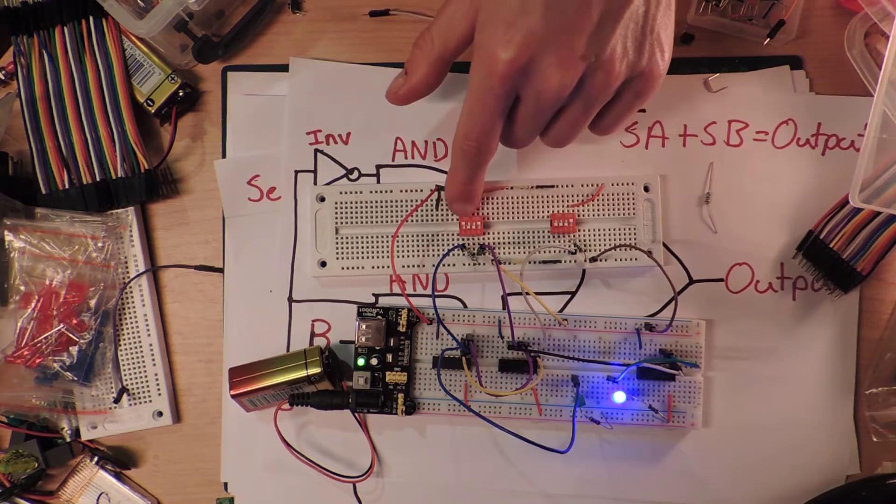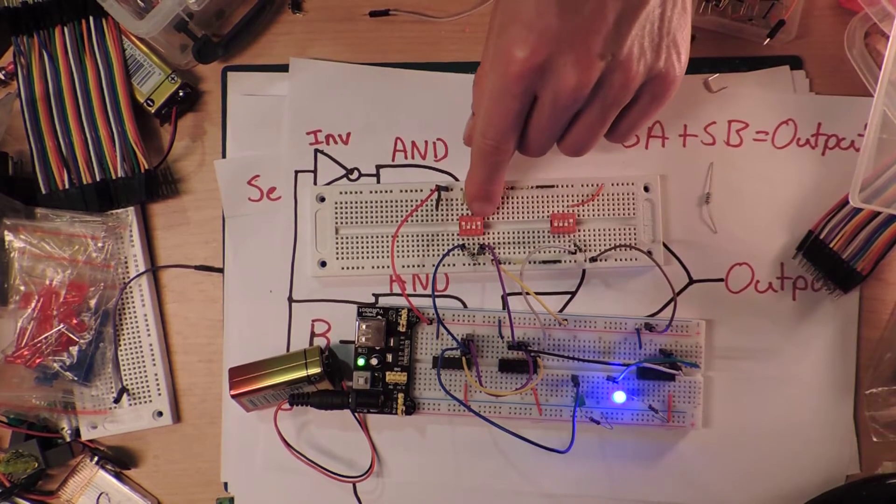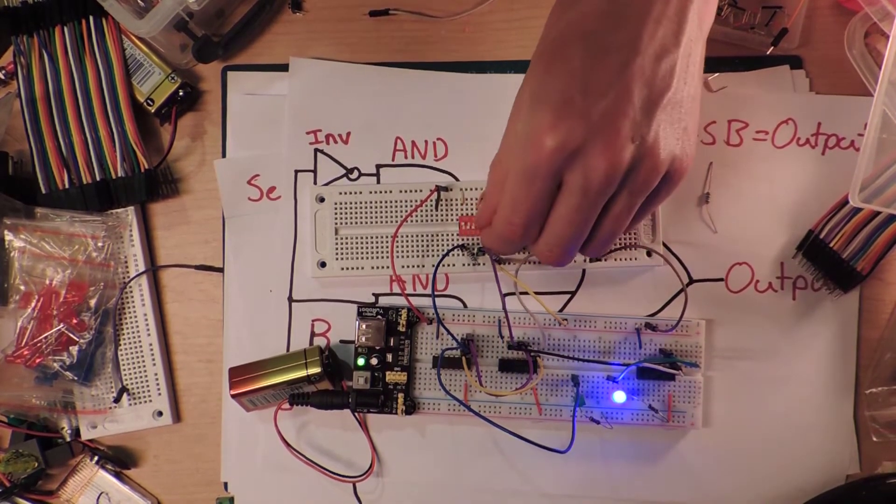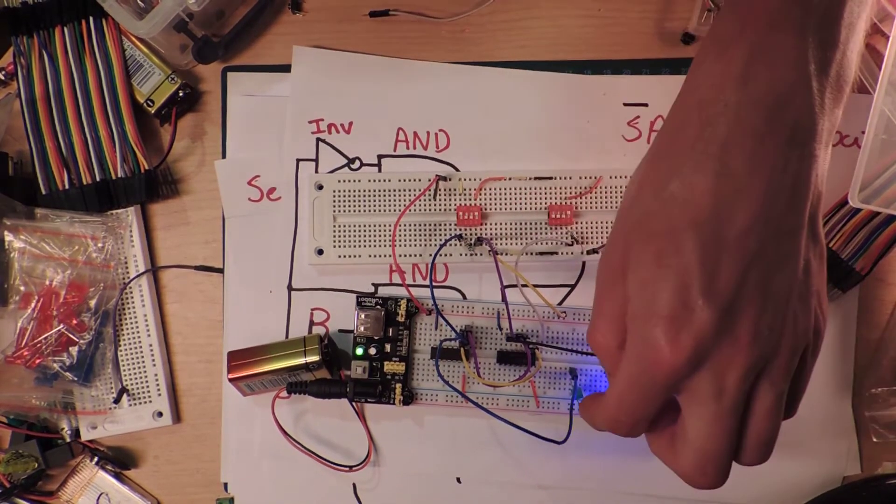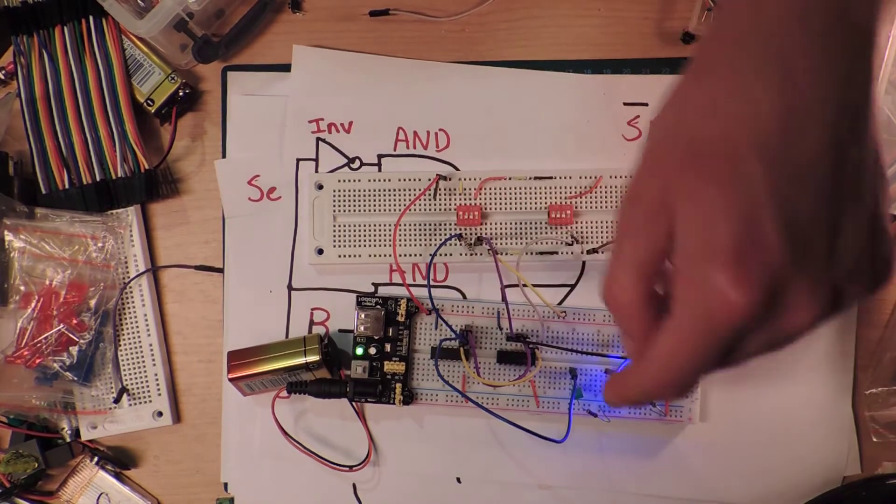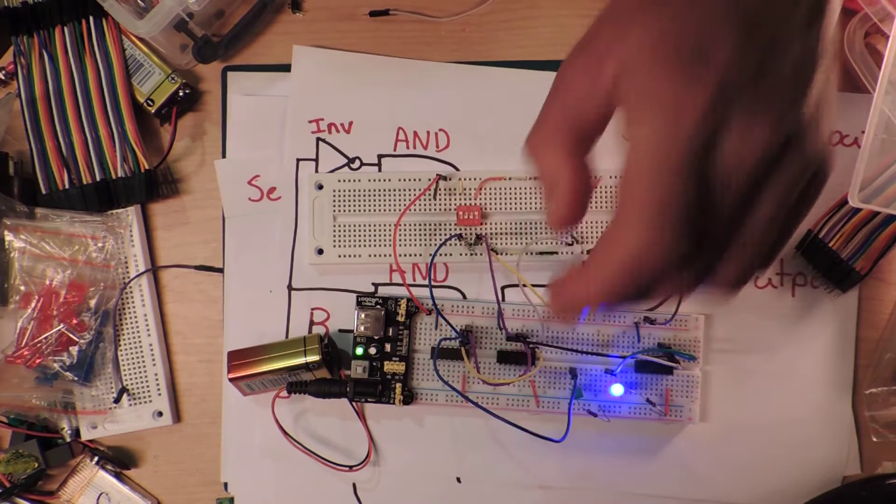So right now it is high, so it's selecting from the B input which is here. If I flick the switch up and down, the LED comes on and off. You can tell it's high because the green LED is off because it's being inverted. That's the inverted output of the inverter thing.